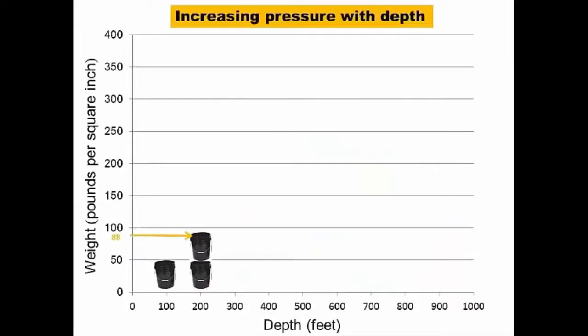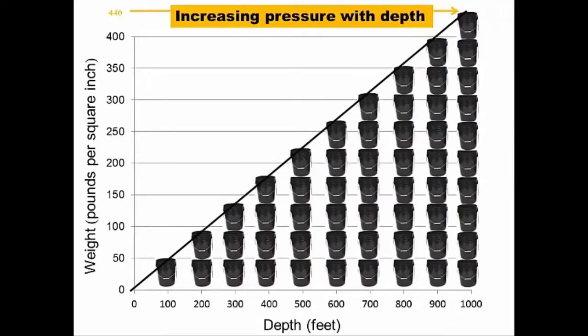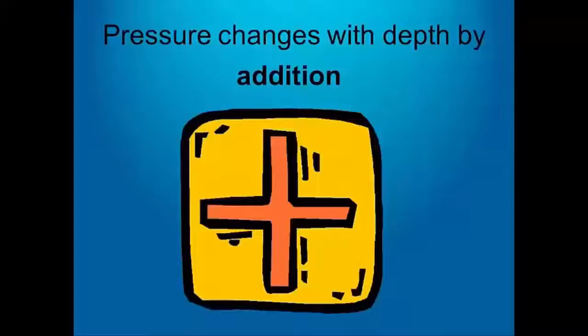At 200 feet, that pressure doubles to 88 pounds per square inch. With each increase of 100 feet, we feel the addition of another 44 pounds per square inch. So if we project the graph line, we see that once we reach 1,000 feet, the pressure is equivalent to 440 pounds per square inch, or the equivalent of 10 full buckets per square inch. The point of showing this as buckets of water is to get across the concept that pressure changes with depth by addition.